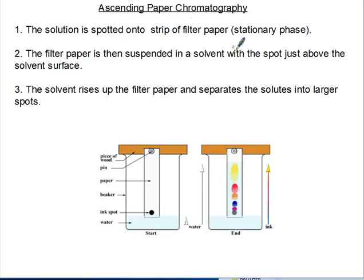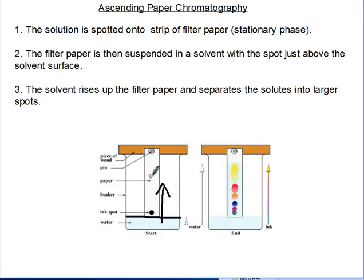In ascending paper chromatography, the solution is spotted onto a strip of filter paper. Here we have our ink spot, and the filter paper is suspended in a solvent with the spot just above the solvent surface. The solvent rises up the filter paper and separates the solutes into distinct spots. As the water rises, it carries along the different constituents, and you will see them separated into different colors. This is ascending paper chromatography, and it can be used to separate the constituents of a solution.